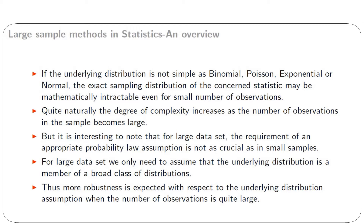It is interesting to note that for large data sets, the requirement of an appropriate probability law assumption is not as crucial as in small samples. For large data sets, we only need to assume that the underlying distribution is a member of a broad class of distributions. More robustness is expected with respect to the underlying distribution assumption when the number of observations is quite large.